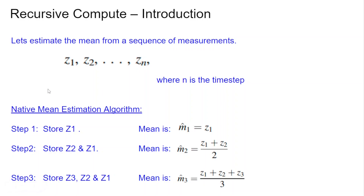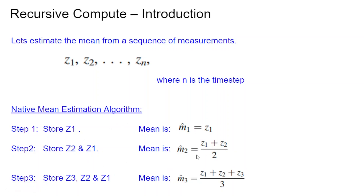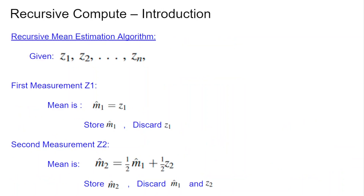For naive mean computation, the first step is storing z1, so the mean m1 equals z1. When z2 comes in, we store both z1 and z2 and compute the mean as (z1 + z2) / 2. When z3 comes in, we compute (z1 + z2 + z3) / 3, and so on. This is very inefficient — we are storing all data points, which is inefficient both computationally and from a memory perspective.